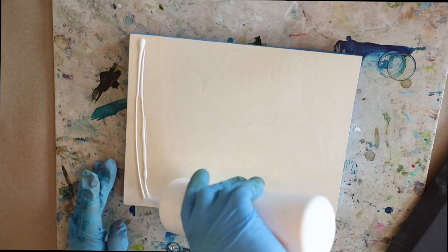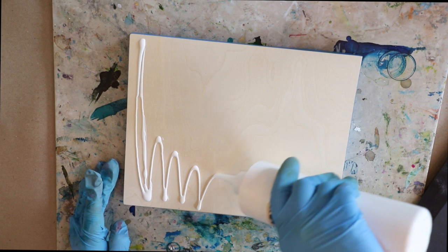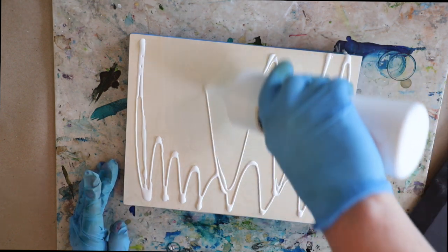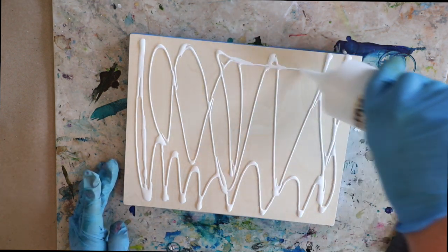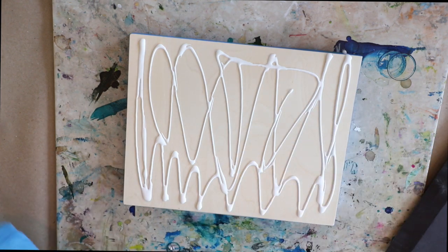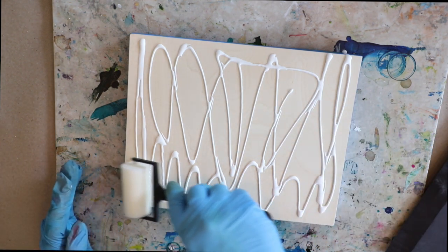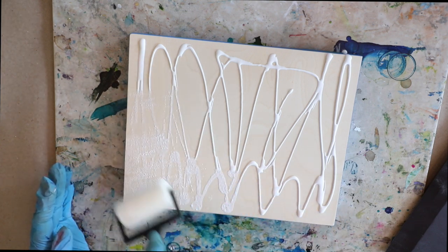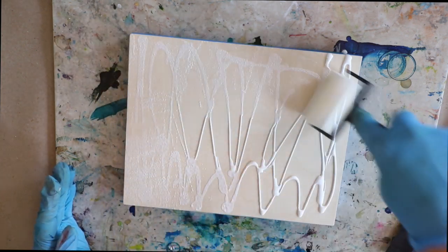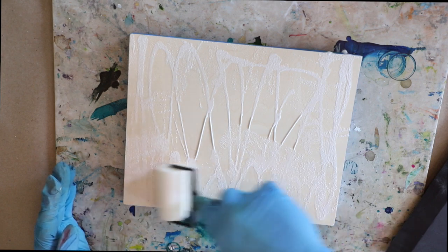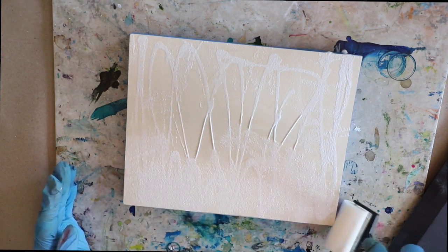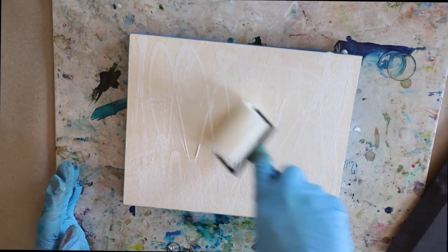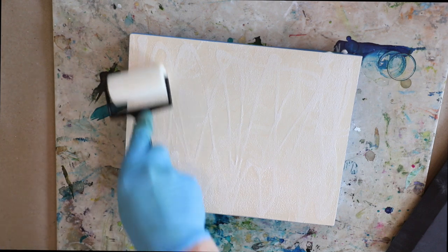The glue I'm using is a PVA glue—it's a pH neutral archival glue for bookbinding and works great for mounting photos to cradleboard. I'm really generous with it and will spread it on with a foam roller. You can use a foam brush too. If there are gaps once I get this spread out, I'll add some more glue. I really want to make sure there's no gaps where the paper could not adhere to this board.